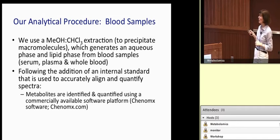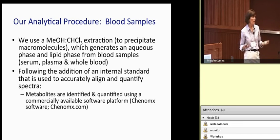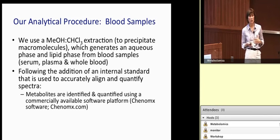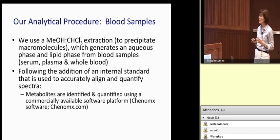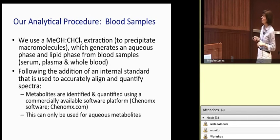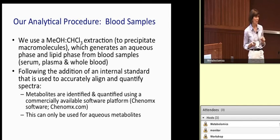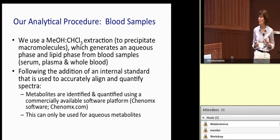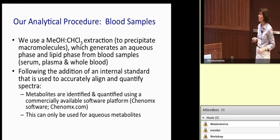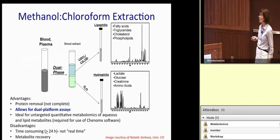We use a software platform called Konomics. It is commercial, so it is expensive. But it's probably one of the most reliable and detailed — it has about a 360-compound library for NMR metabolomics. Right now they only have an aqueous metabolite library; they don't allow for quantifying lipid metabolites. We're actually approaching them to try to fix that and build a lipid library for NMR metabolomics.